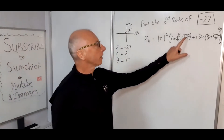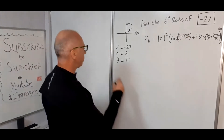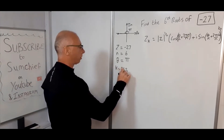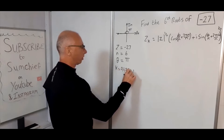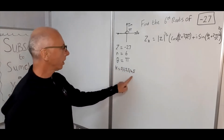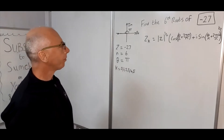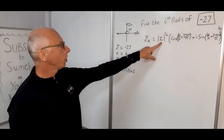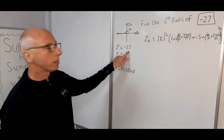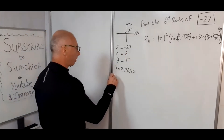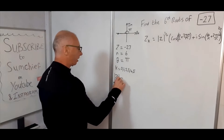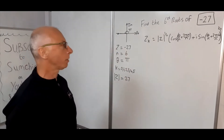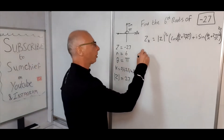K is just the iterations, so K equals 0, 1, 2, 3, 4, 5 — that's six iterations from 0 to 5. The modulus of Z in this case is pretty easy: it's just 27, the absolute value of minus 27. So let's plug this in.